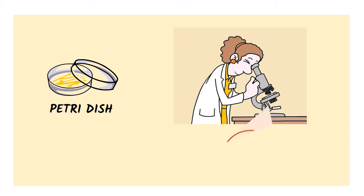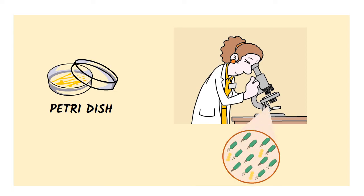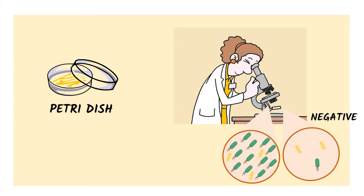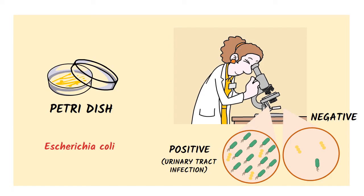If it is a true infection, usually one type of bacteria dominates. If there are no harmful germs, the test is called negative. If there are bad germs growing, the test is positive and it means that a urinary tract infection is present. The most common germ that causes urinary tract infections is called Escherichia coli, and it is a bacteria that normally lives in our intestines.